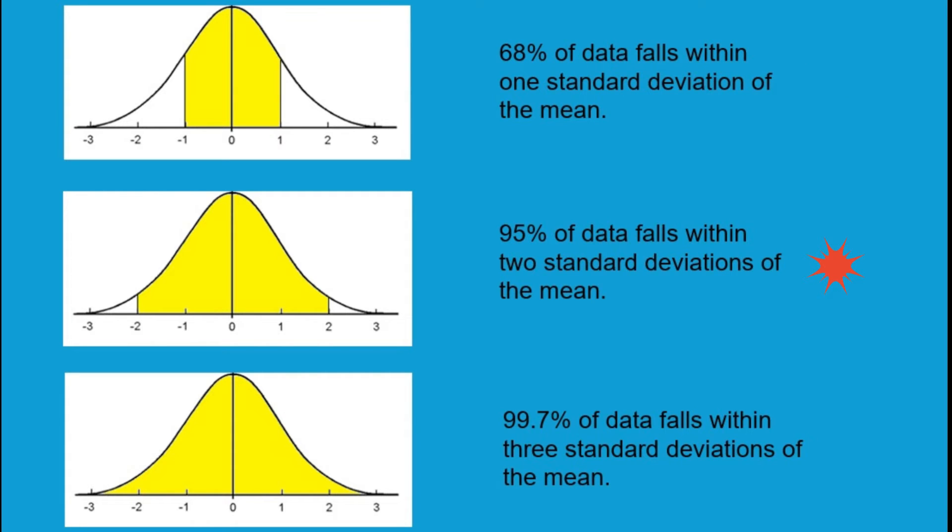The second part of the empirical rule tells us that 95% of our data will fall within two standard deviations. So if we have negative 2 and 2 that's two standard deviations either side of the mean. That's this area here.